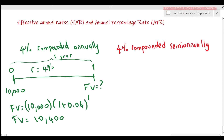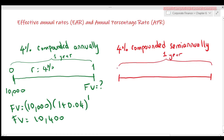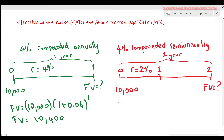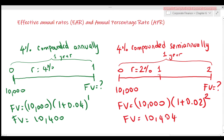In the second option, 4% compounded semi-annually means the account pays 2% every six months. Over one year there are two periods — six months from now and twelve months from now — with a period rate of 2%. Investing $10,000 today, the future value in one year is 10,000 times (1 + 0.02)^2, which equals $10,404.